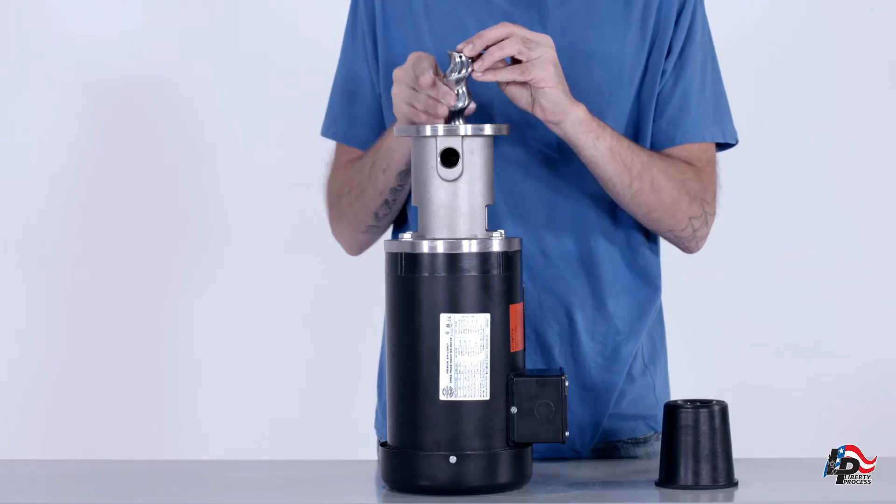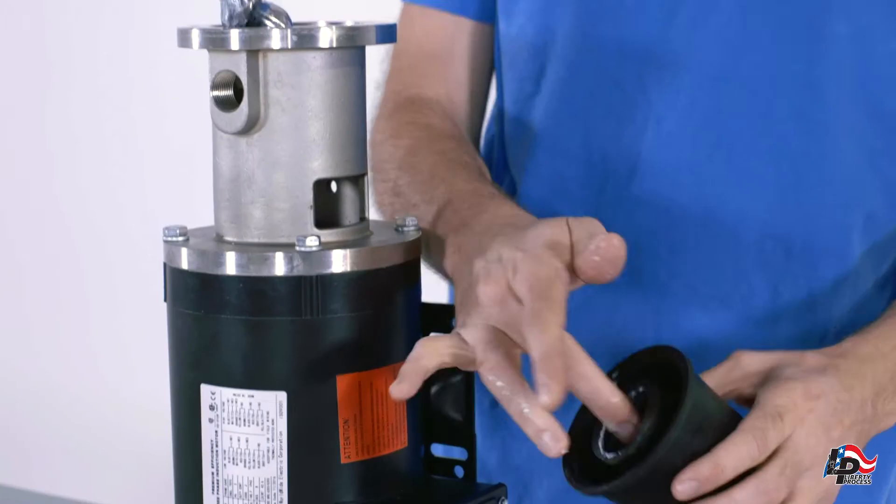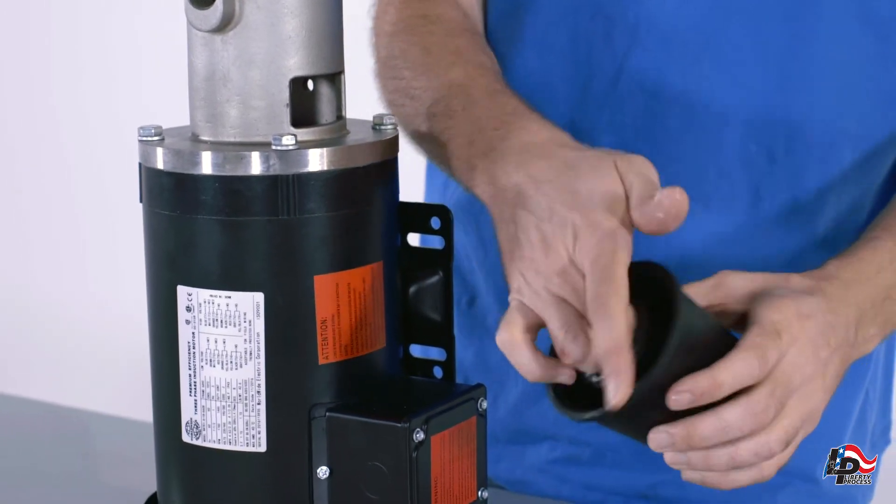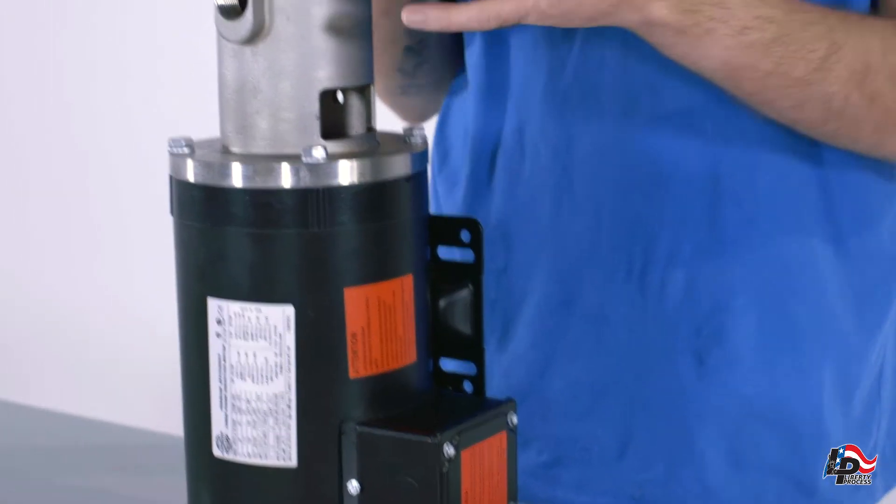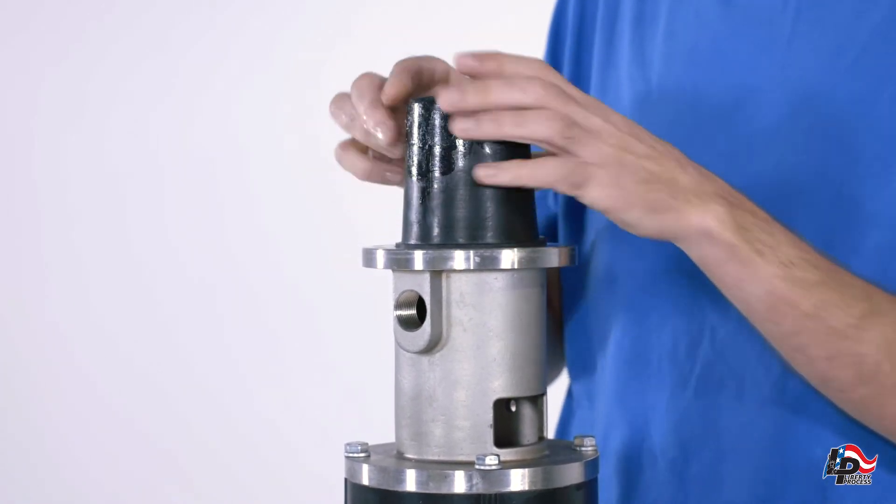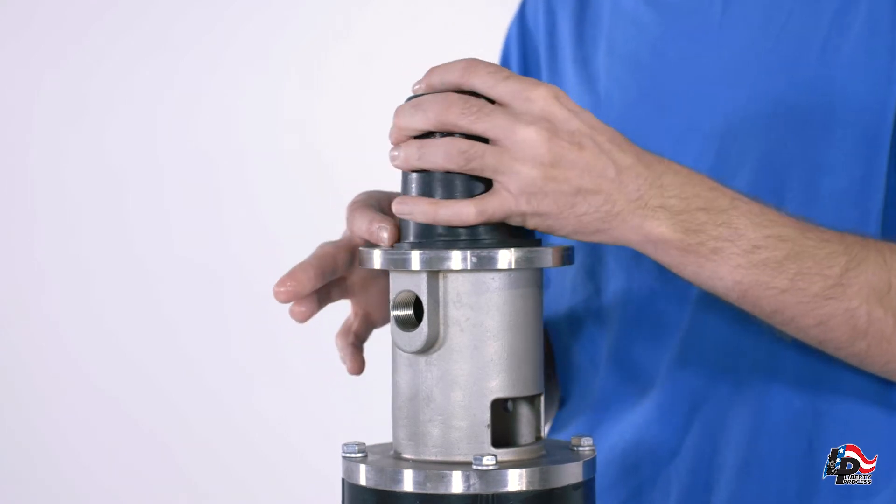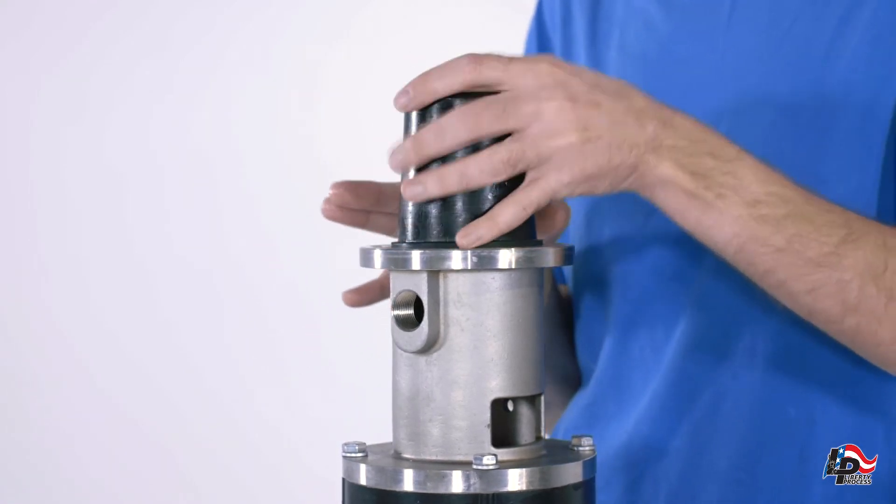Lubricate the rotor and interior of the stator with liquid hand soap. Slide the stator open side down onto the rotor and push down. The stator will seat itself into the channel on the discharge casing and acts as a seal.